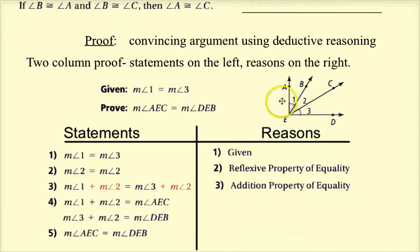Now angle one plus angle two. Right here, look at my picture. Angle one plus angle two, if I add them, that's really angle AEC. And angle three plus angle two, if I add those, that's really angle DEB. So the reason for step four is the angle addition postulate that we talked about back in chapter one. The two parts added together equal the whole angle.